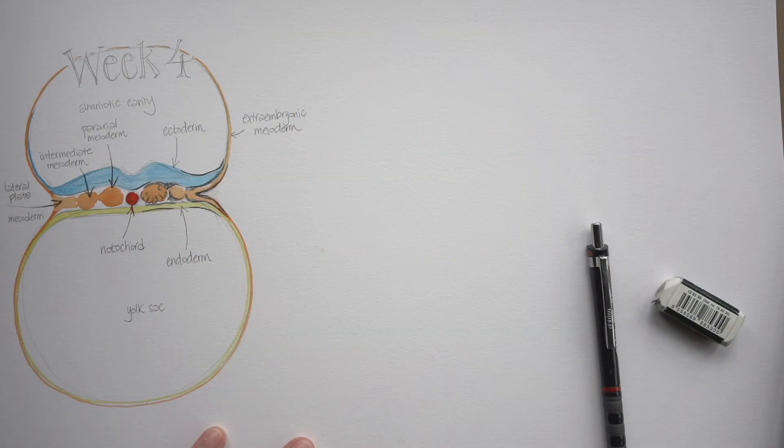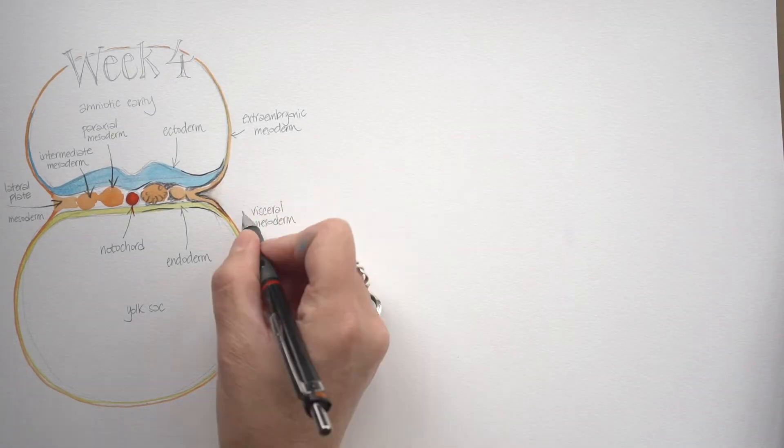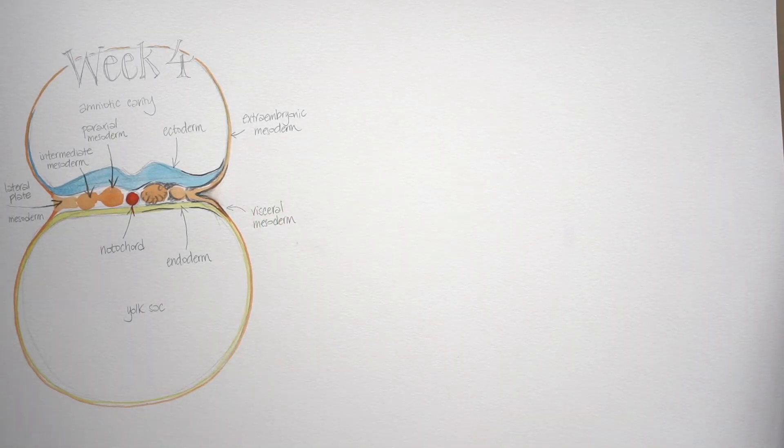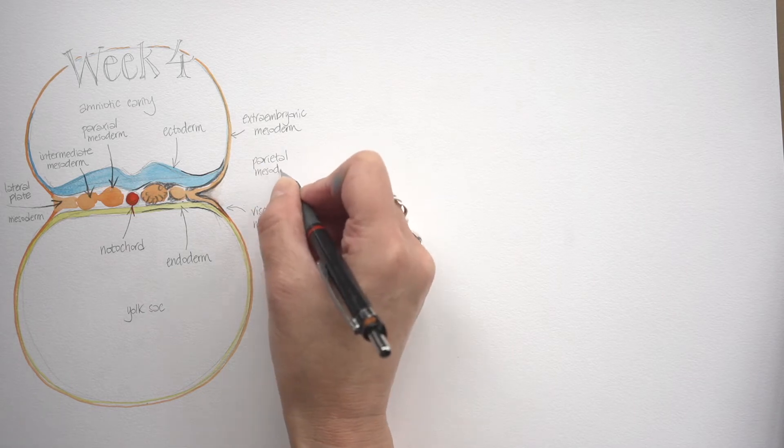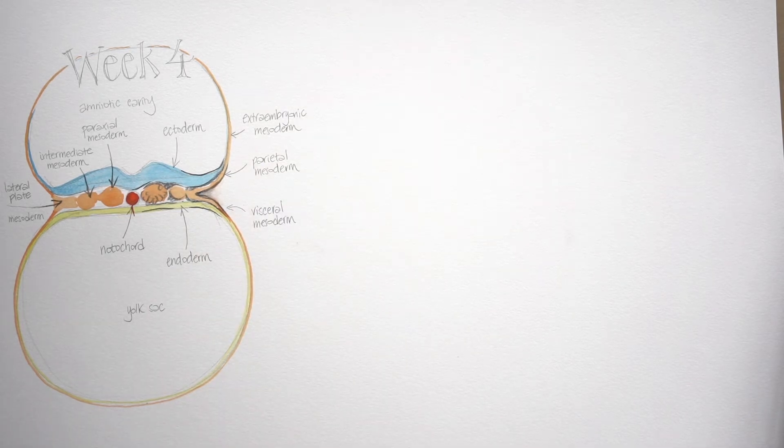We get a cleft which extends inside the embryo, almost as though you've taken your jam sandwich and you're just pulling apart the pieces of bread, but each piece of bread still has a layer of jam on it. So the jam next to the ectoderm piece of bread is the parietal or somatic mesoderm, and the layer next to the endoderm is the visceral or splanchnic mesoderm.